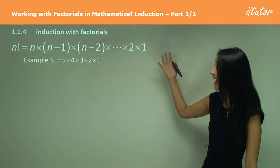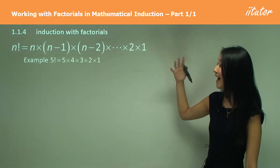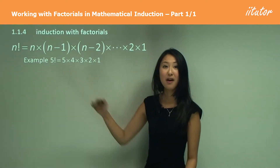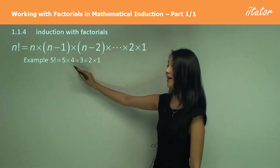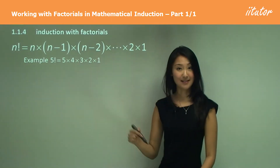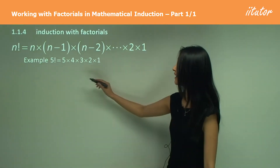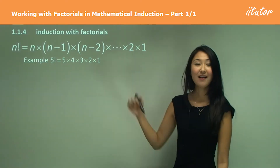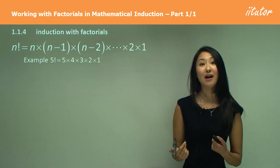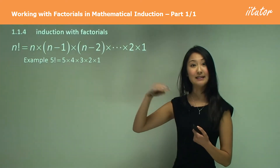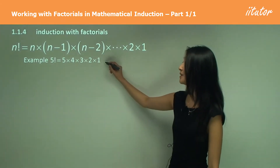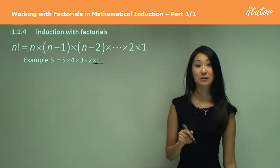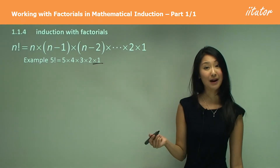An example of that is if we have 5 factorial, we'd start off with 5, and then one number less than that which is 4, and then 3 times 2 times 1. So remember, you just multiply by the next number down until you get to times 1 — it always finishes with multiplied by 1.